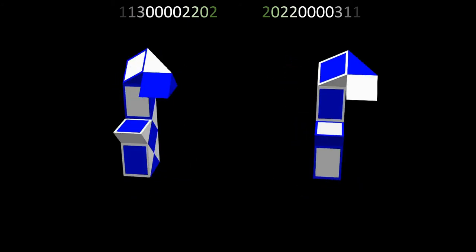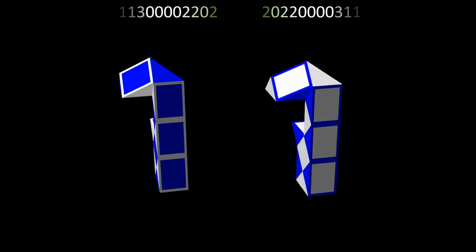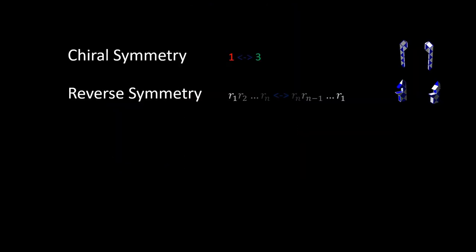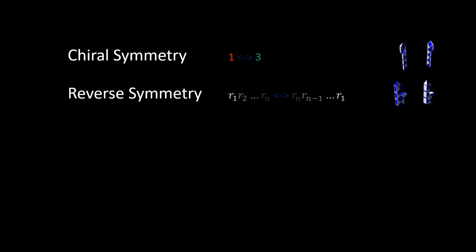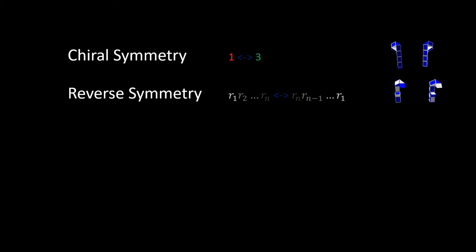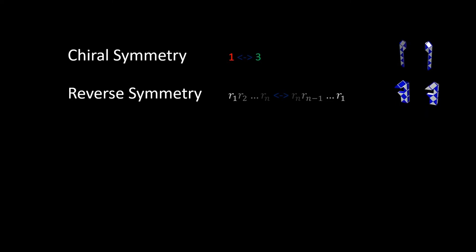We can represent that in the rules by flipping the order that the rules are applied. To review: we have chiral symmetry, where swapping the ones with the threes in a sequence of rules produces two snakes which are a mirror image of one another. And we have reverse symmetry, where starting from the opposite end of the snake applying the same rules - or starting from the same end and applying the rules in reverse order - produces a similar looking solution.